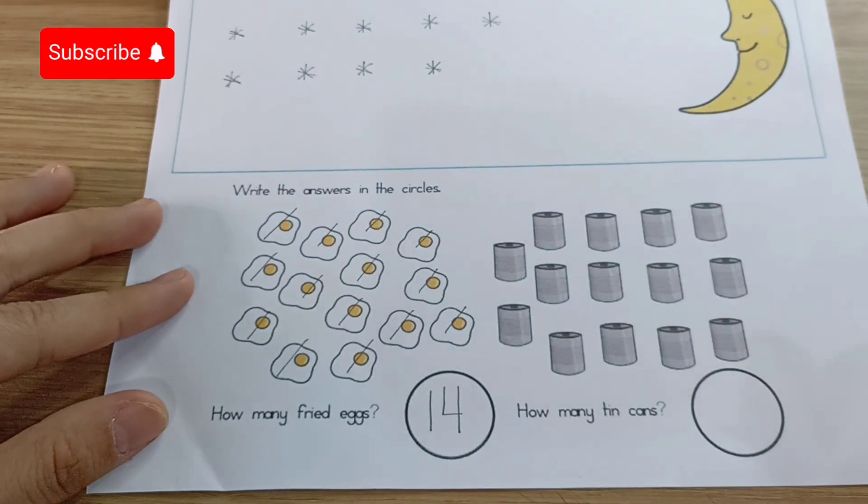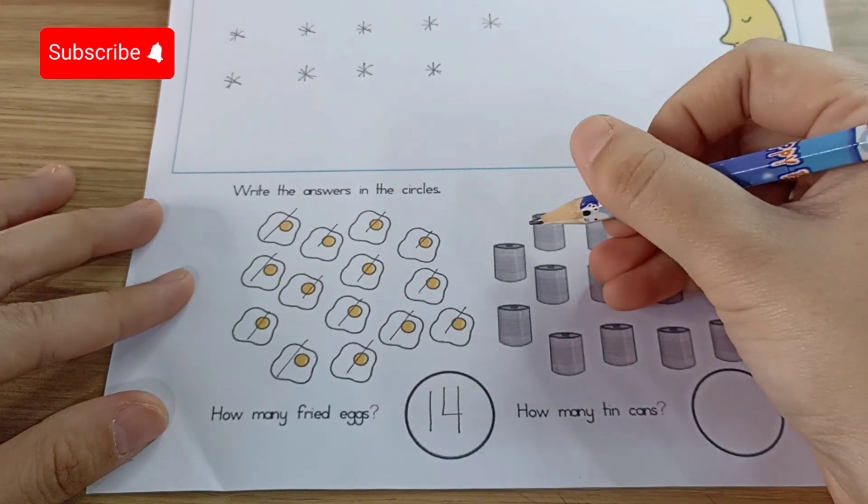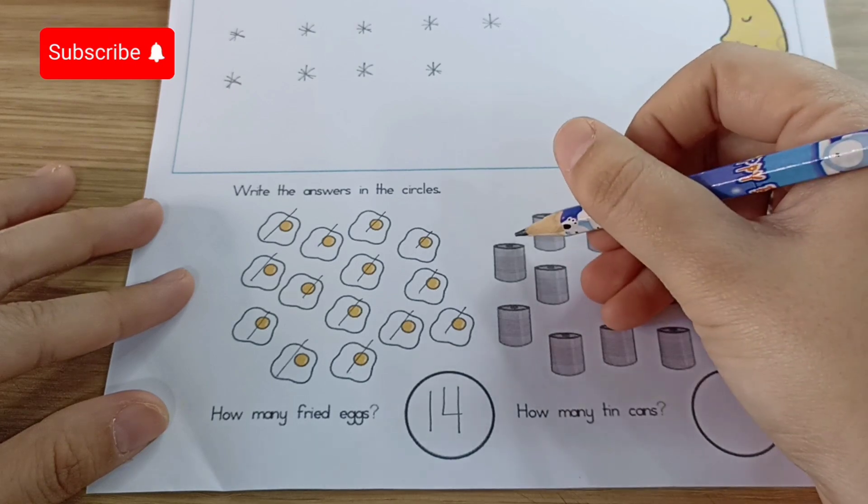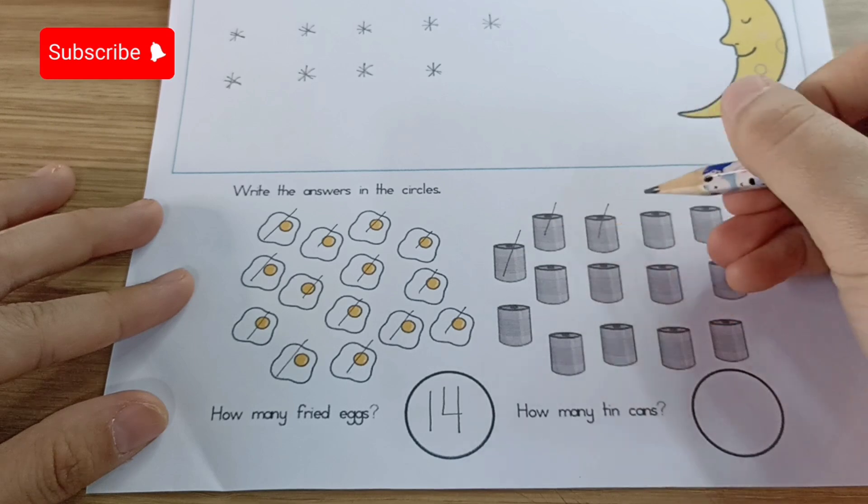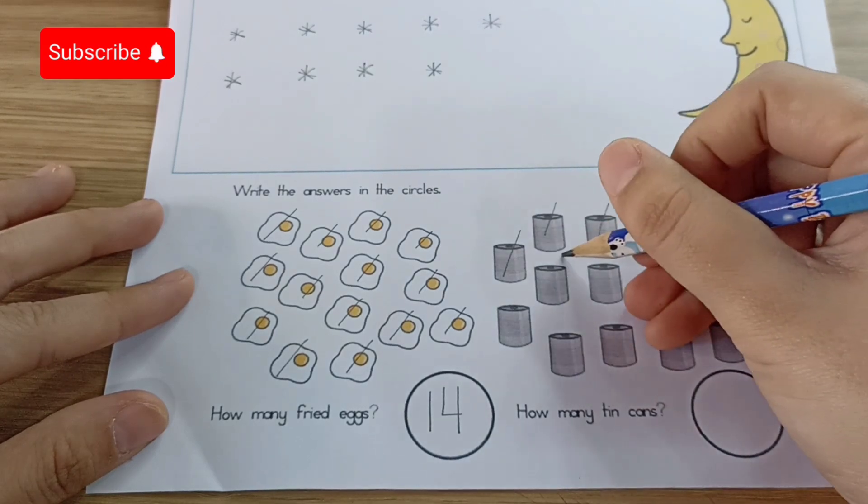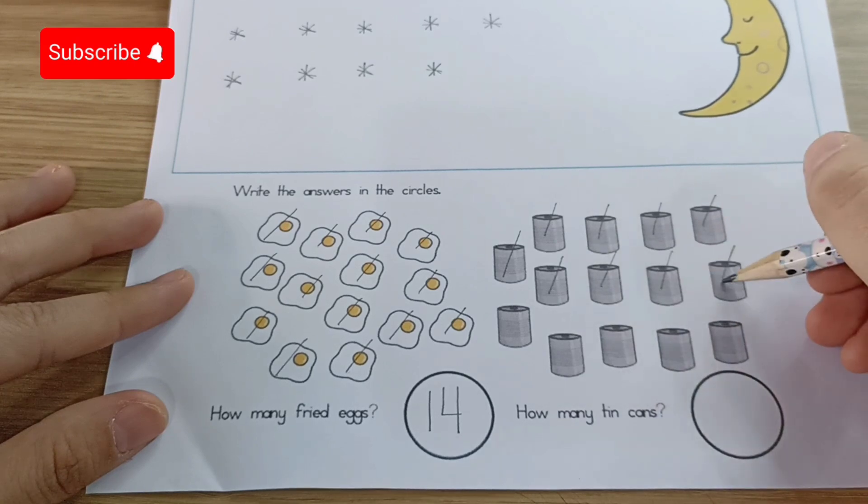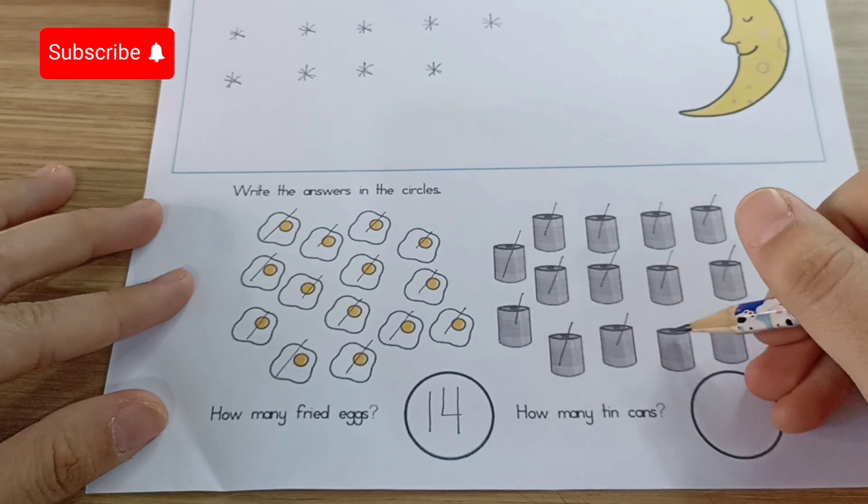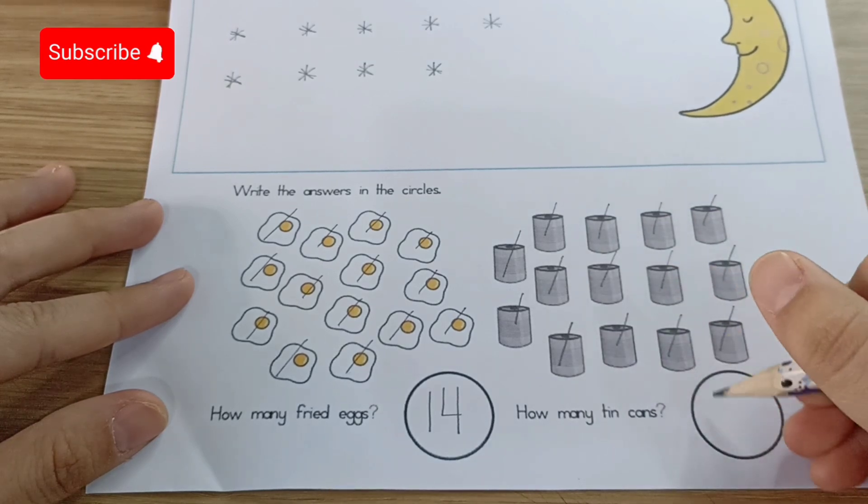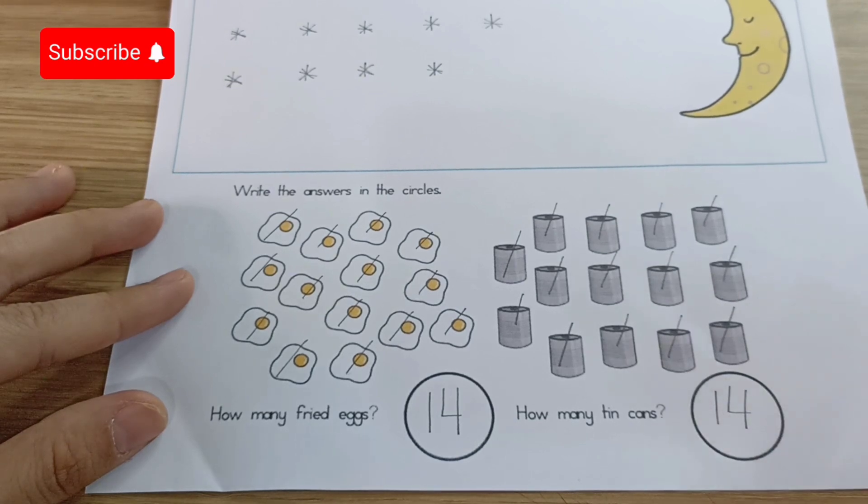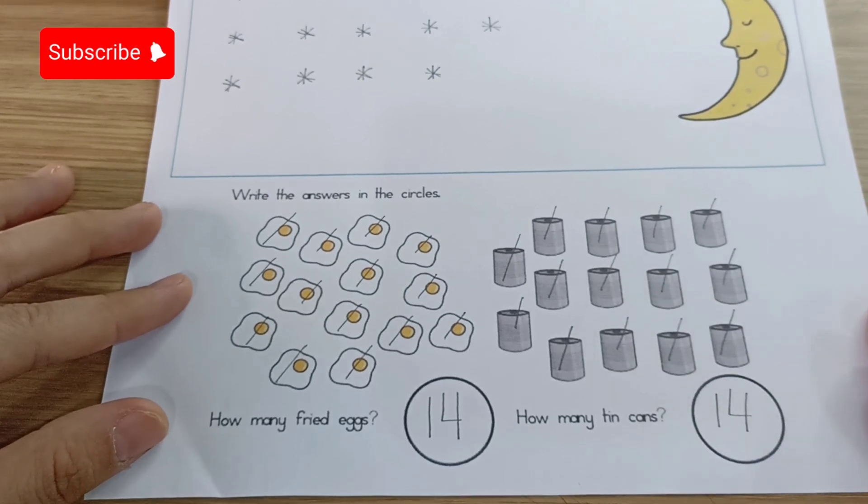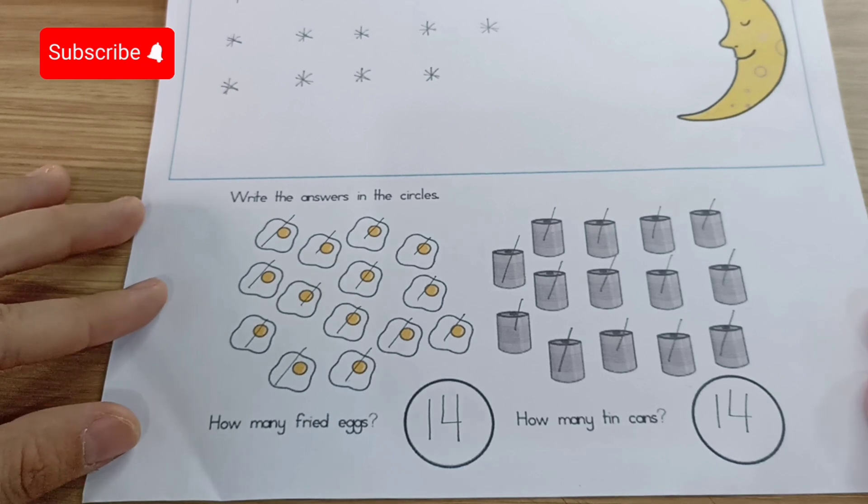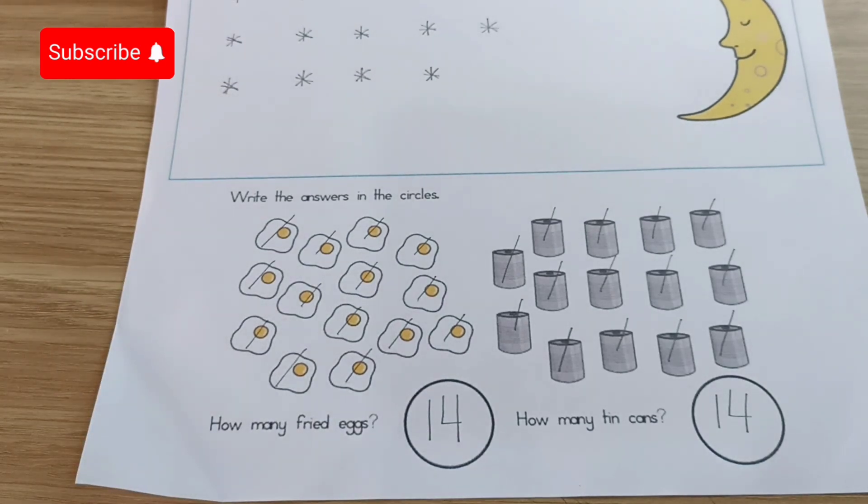Now how many tin cans do you see? Let's count from the left. One, two, three, four, five, six, seven, eight, nine, ten, eleven, twelve, thirteen, fourteen. Fourteen, yes, fourteen tin cans. Now it's your turn. If you are done, you can show it to me children and tidy up your paper and pencil.